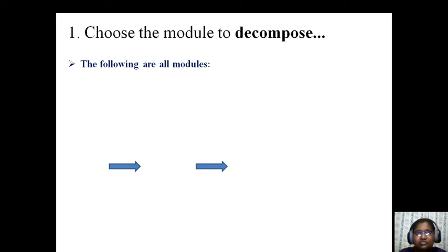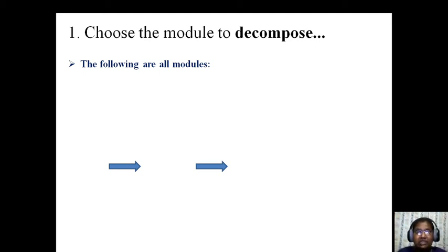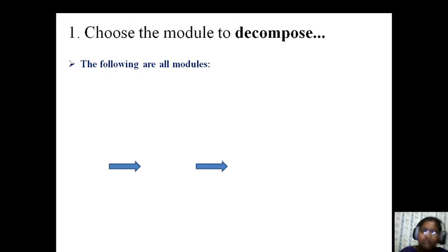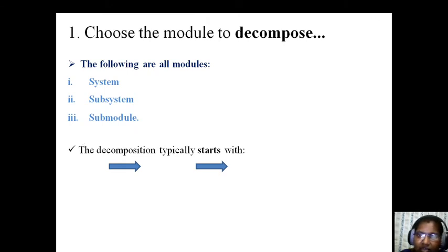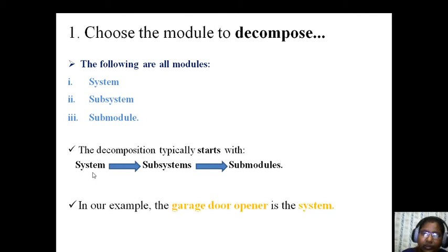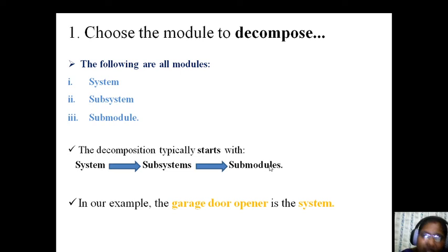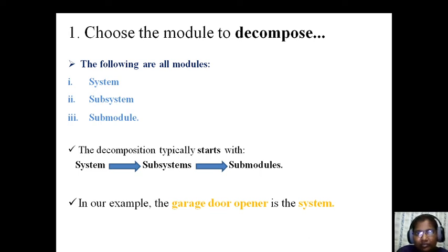Module decomposition goes from big to small only — from the biggest architecture to smaller modules. After dividing the architecture into smaller modules, if you want to divide further into sub-modules, we repeat. The decomposition typically starts with the system — the big one — divided into subsystems, and later into sub-modules. In our example, the garage door opener is a system. We verify its functionalities: whether it is working properly, able to find out the obstacle, working within constraint time, and opening and closing the door correctly. One constraint at this level: the opener must interoperate with the home information system.